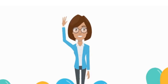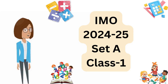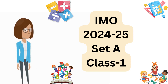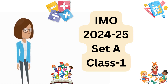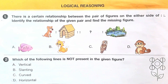Hello everyone, welcome back to my channel. Today we are going to see the IMO paper of 2024-25 Class 1, Set A. Logical reasoning, question 1: there is a certain relationship between the pair of figures on either side of the column. Identify the relationship of the given pair and find the missing figure.